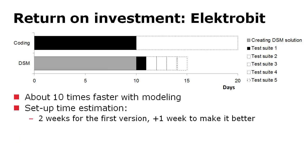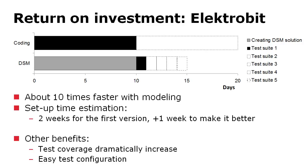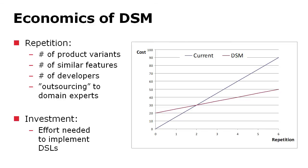There are also other remarkable improvements: test coverage dramatically increases when modeling test cases and generating them, and tests can be configured more easily. All these examples come down to the economics of when domain-specific modeling makes sense. These four cases show it makes a lot of sense in situations involving repetition: building a product line, having variants, a single product with multiple similar features, multiple developers doing the same kind of work, or outsourcing work to domain experts so non-programmers can contribute.